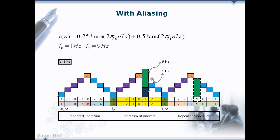9 Hz is aliased with 1 Hz. Similarly, minus 7 Hz is aliased with 1 Hz. In the same way, 6 Hz and minus 10 Hz are aliased with minus 2 Hz. Coming back to our previous example where we started with two components and ended up with only one component — this is a very big problem. If we take this and process it further, we obviously end up with wrong information.